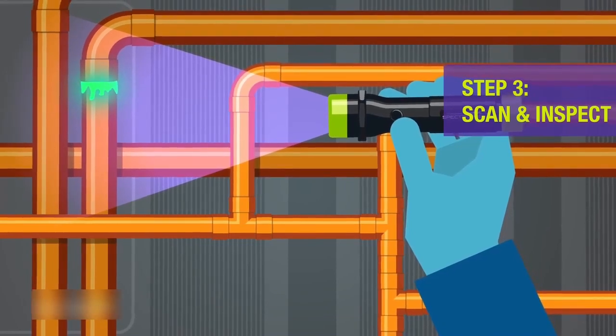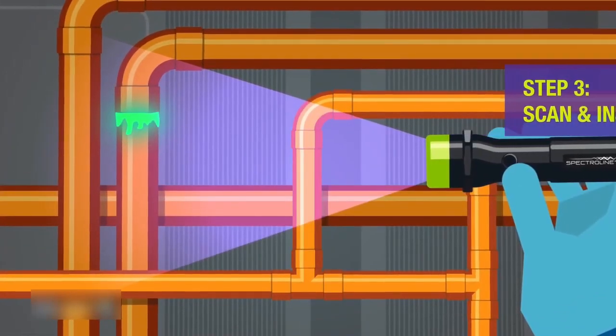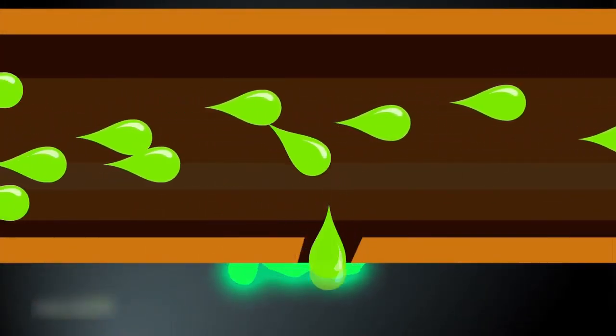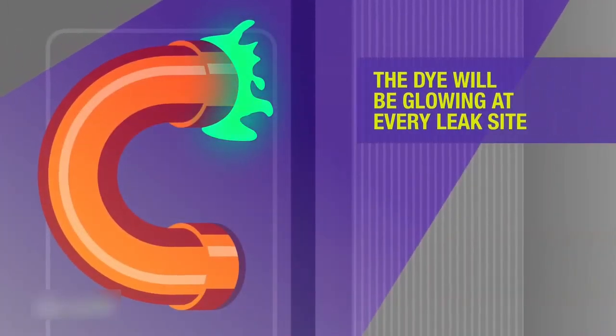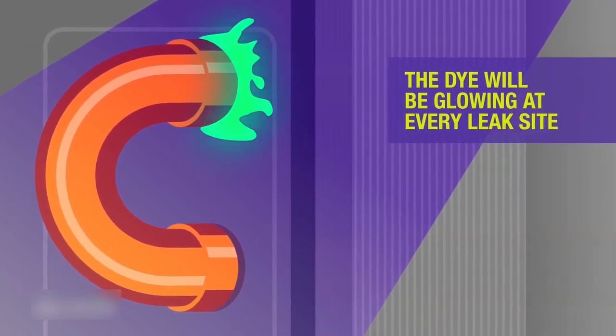The dye will be glowing at every leak site. The dye-refrigerant mixture circulates and accumulates even at pinhole leak sites. When scanned with a UV light, it's easy to spot where the dye is leaking from.